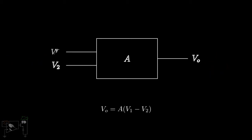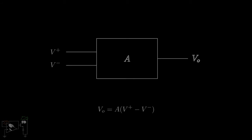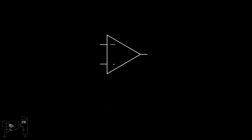We'll denote V1 by V-plus and V2 as V-minus. We draw an op-amp using a triangular symbol with two input terminals — the positive and negative — and one output terminal. Note that the output here will be measured with respect to the ground potential.